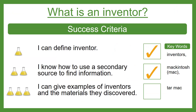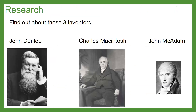We know now how to use a secondary source to find information — you can use books and computers to help. We're going to look at three inventors who were really important to the development of materials. The first one: John Dunlop. The next: Charles McIntosh. And: John McAdam.